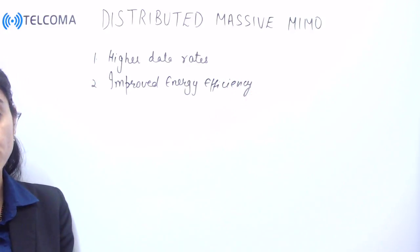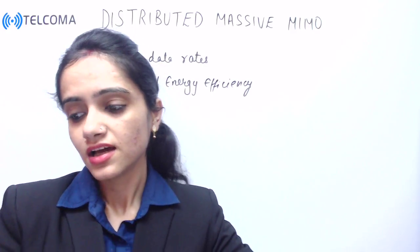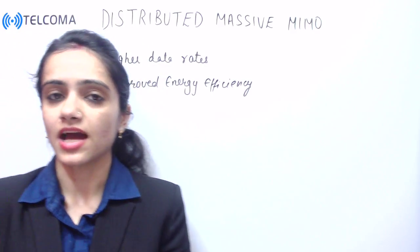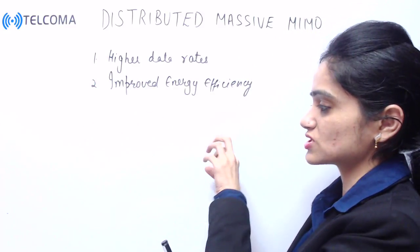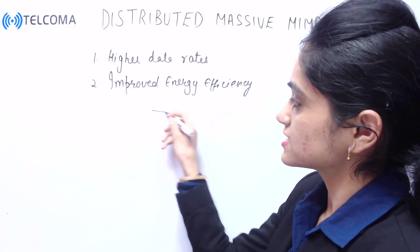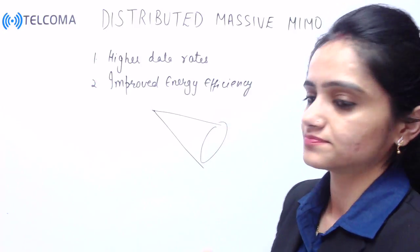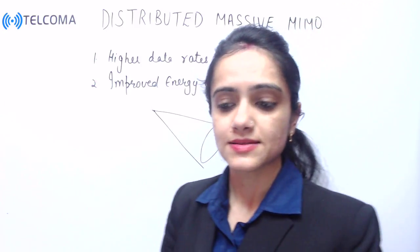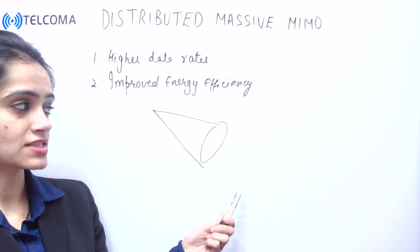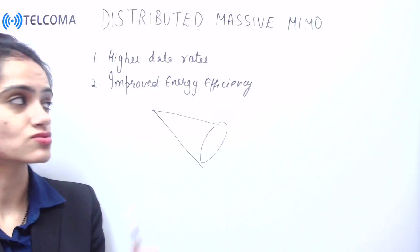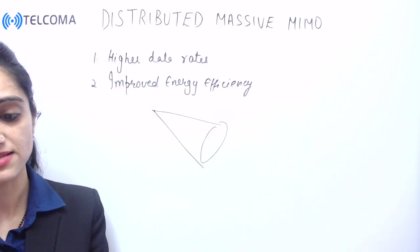Next, because of massive MIMO, we have improved energy efficiency. The transmitted RF energy can be more sharply focused in space where the transmitters are located, and energy waste can be minimized. This is the improved energy efficiency benefit of massive MIMO.